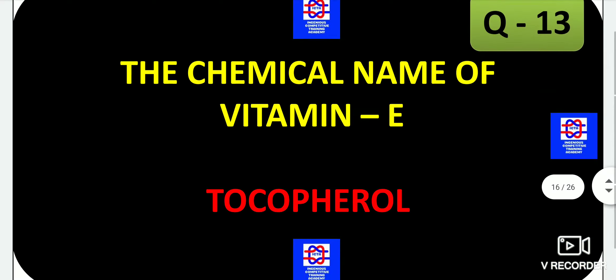Next, the chemical name of Vitamin E — Vitamin E is known as tocopherol. Vitamin K is naphthoquinone, Vitamin D is calciferol, Vitamin C is ascorbic acid. There are various things you have to remember.